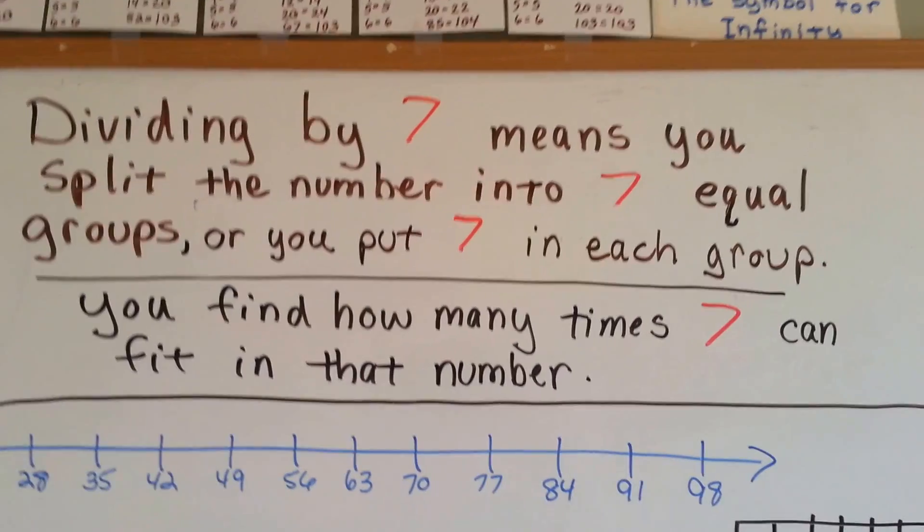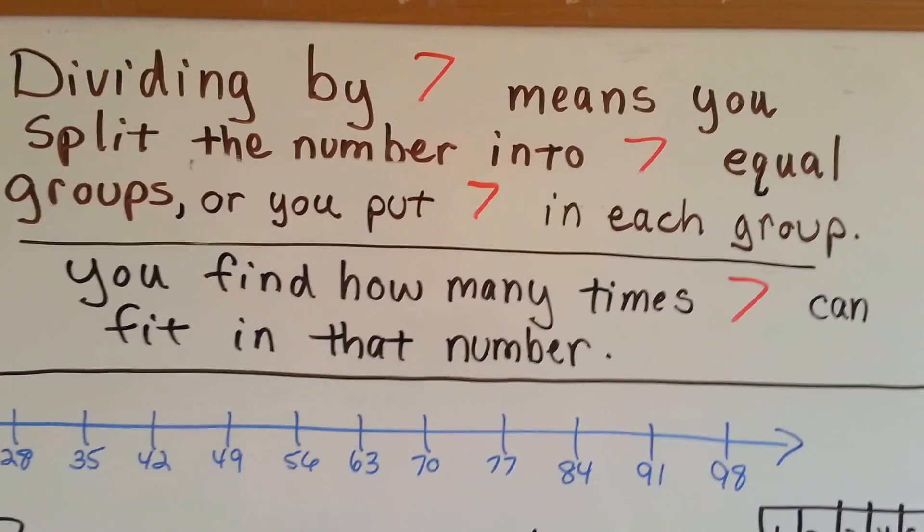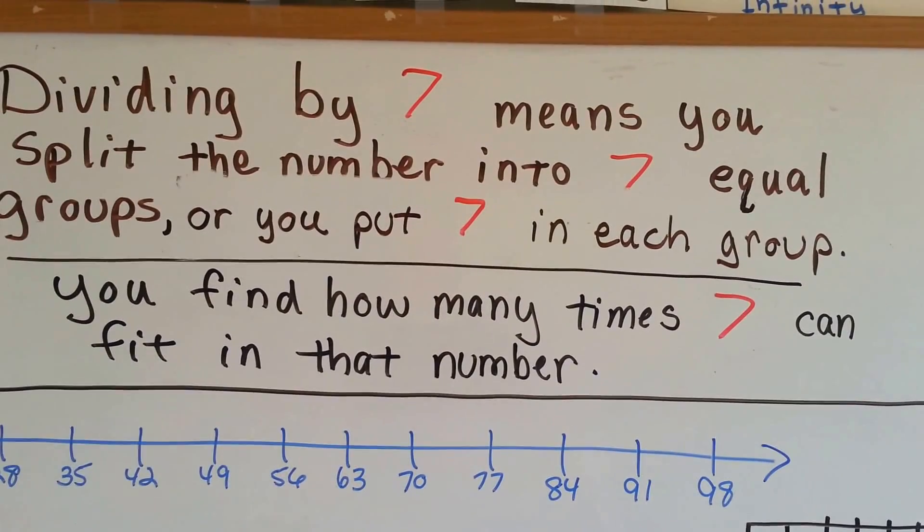So let's look at our rule. Dividing by 7 means you split the number into 7 equal groups, or you could put 7 in each group. Either way, it'll work. You'll find how many times 7 can fit into that number.